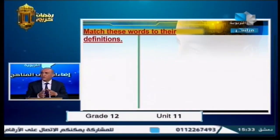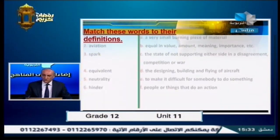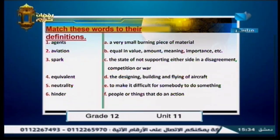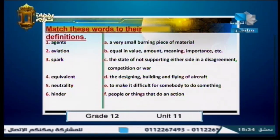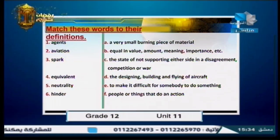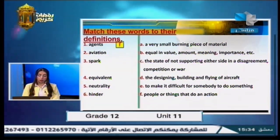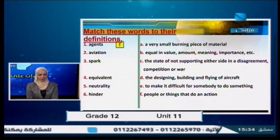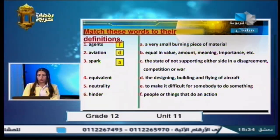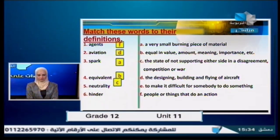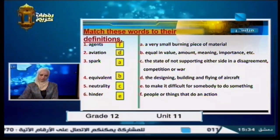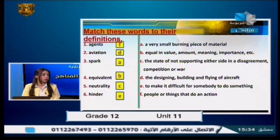Let's match these words to their definitions. 'Agents' matches F — people or things that do an action. 'Aviation' matches D — the designing, building, or flying of aircraft. 'Spark' matches A — a very small burning piece of material. 'Equivalent' matches B — equal in value, amount, meaning, or importance. 'Neutrality' matches C — the state of not supporting either side in a disagreement, competition, or war. 'Hinder' matches E — to make it difficult for somebody to do something.